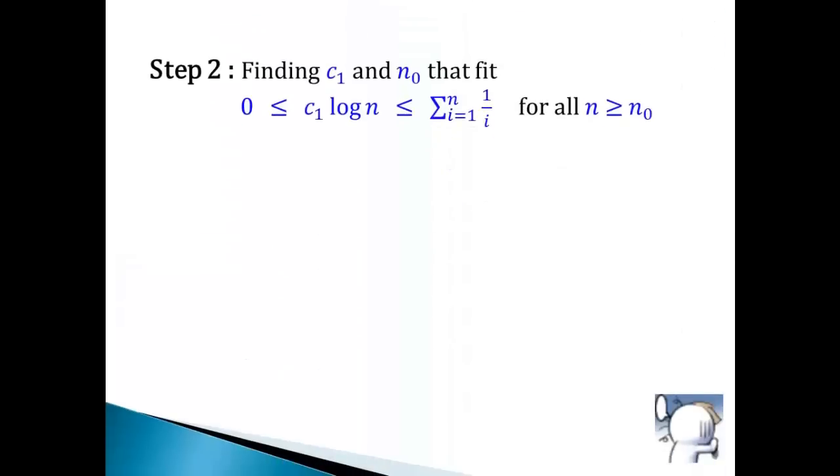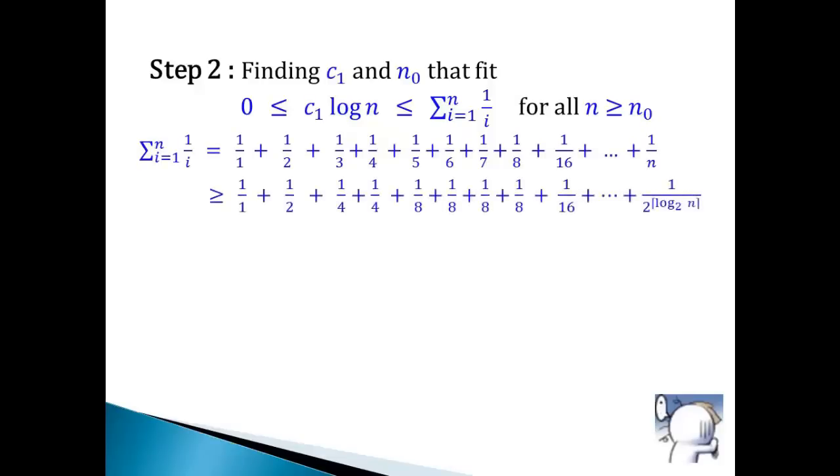Step 2. Start by expanding the sum of the first n terms. With the hint, we increase each denominator to the next power of 2. This will decrease the value. Then we properly group it with parentheses. Notice that each group has a value of 1/2.